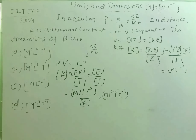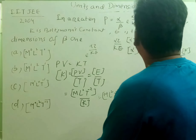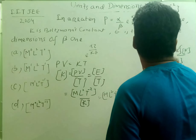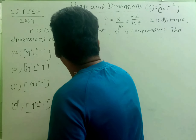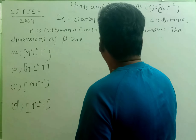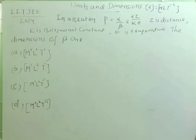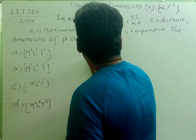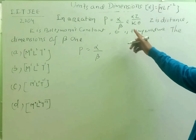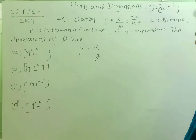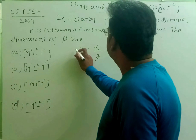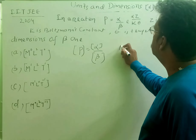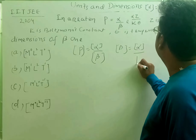Now, what will be the dimensions of beta? P equals alpha divided by beta, multiplied by e to the power alpha z by k theta. Since e to the power of anything is dimensionless, the dimensions of P equal the dimensions of alpha divided by the dimensions of beta. Therefore, the dimensions of beta equal the dimensions of alpha divided by the dimensions of P.